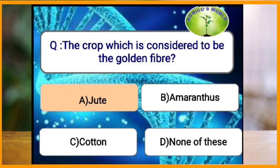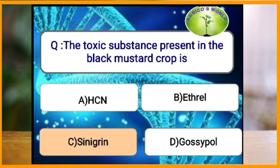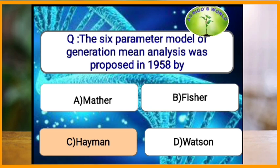What is the toxic substance present in black mustard crop? The toxic substance present in black mustard is sinalbin (synigrin). The six parameter model of generation mean analysis was proposed by which scientist?